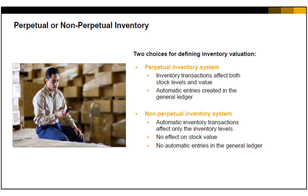A perpetual inventory system reflects the value of inventory postings in terms of monetary transactions in the accounting system. These monetary transactions are carried out when items defined as inventory items are received or released from stock. In a perpetual inventory system, inventory transactions affect both stock levels and stock value.